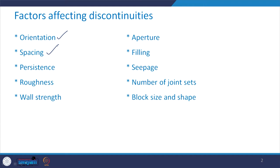Hello everyone. In the previous class we discussed about factors affecting discontinuities and in that series we discussed about 3-4 factors. Let us continue that discussion today and see some of the other factors which influence the behavior of discontinuities. We discussed about orientation, spacing, persistence, and roughness in the previous class. We will take up the remaining factors influencing the discontinuities today.